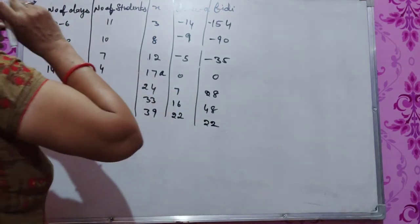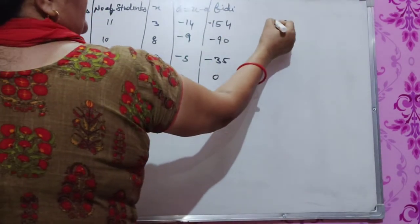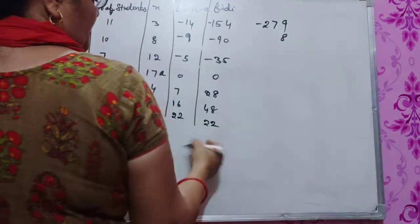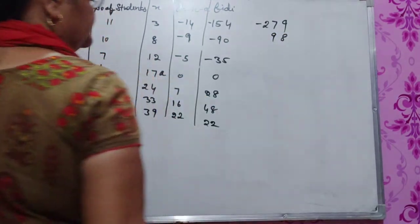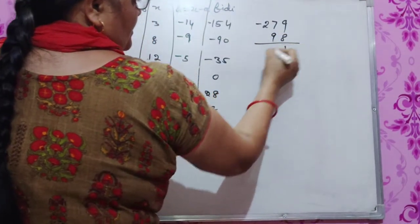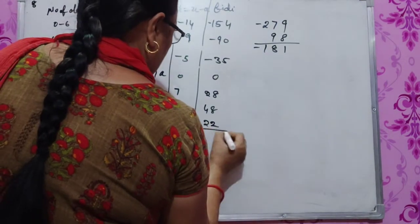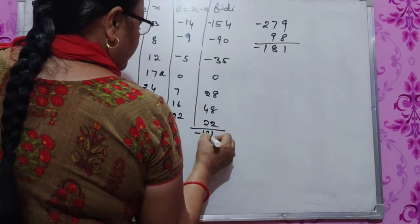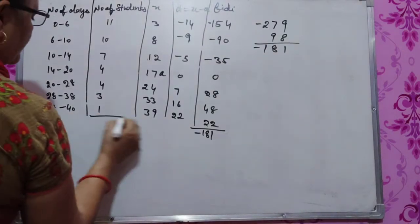Now we'll add these up. The sum: minus 99 plus minus 50 is minus 149, plus 0 is minus 149, plus 28 is minus 121, plus 64 is minus 57, plus 66 equals minus 181. And our total students is 40.